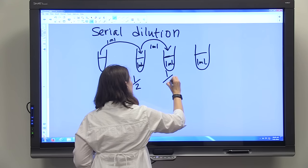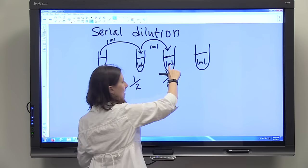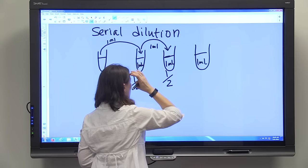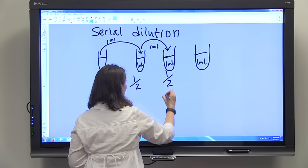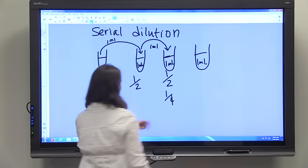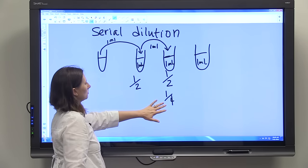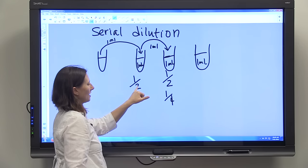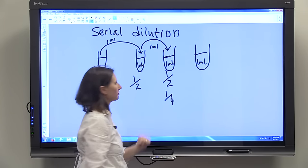So we're doing a 1 to 2 dilution because it's 1 ml to 1 ml, so a total of 2 ml's. But the final dilution is 1 out of 4 because we have 1 half dilution here, then it's half diluted again.